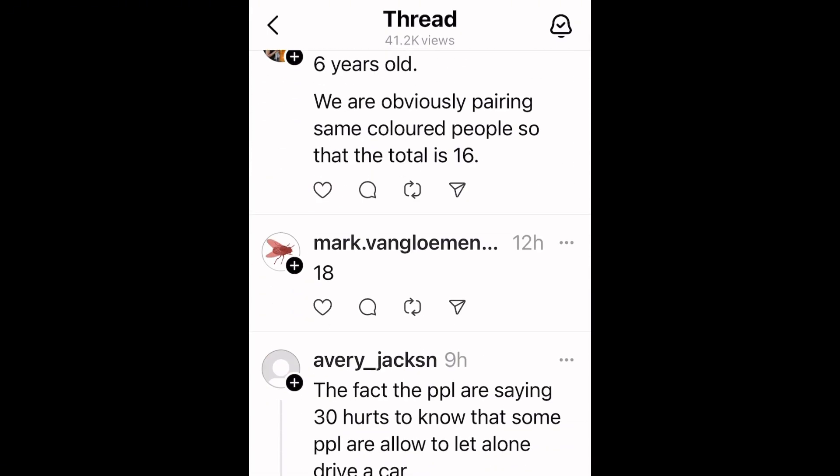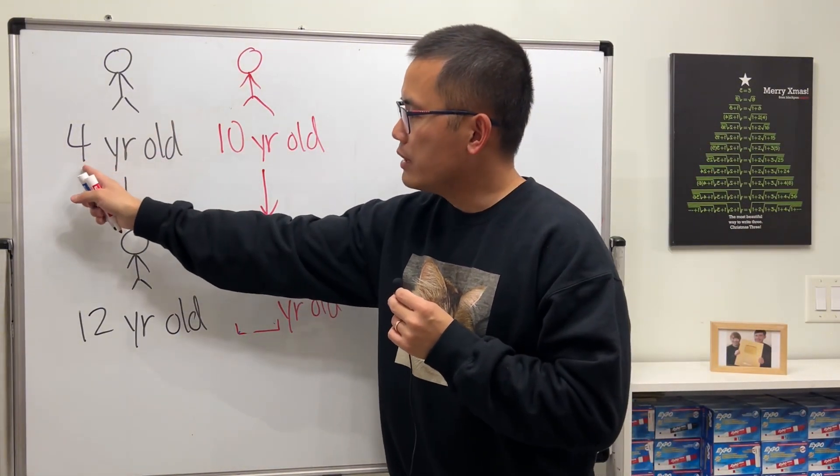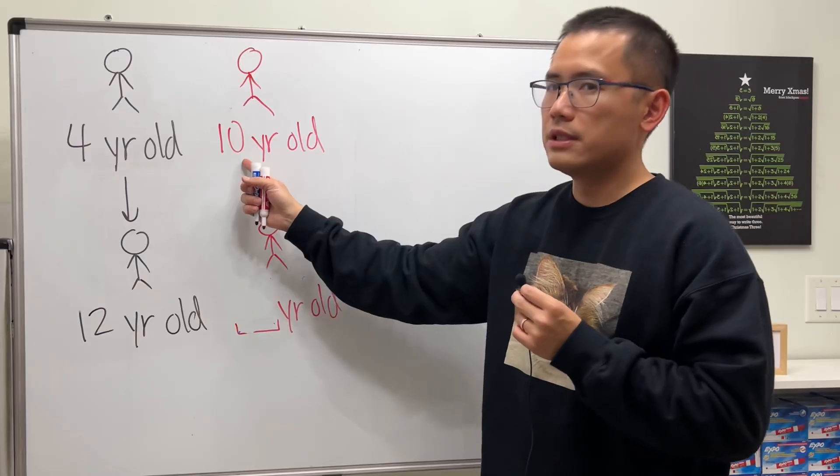So who is correct? Let's have a look. The question is that we have these two people, and when this person is four years old, this person is 10.